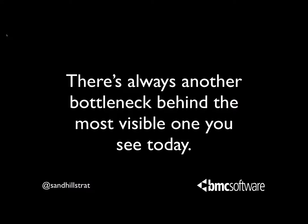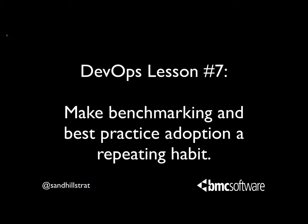There's always another bottleneck behind the most visible one you see today. As you start adopting DevOps, you'll see bottlenecks in your process and have to bust through them — but as soon as you do, more will appear behind them. Keep working on those bottlenecks. DevOps lesson number seven: make benchmarking and best practice adoption a repeating habit. People often do this once or very periodically — not metaphorically after every race the way Mikaela Shiffrin does. After every release, on a fairly fine-grained cycle, sit down for a post-mortem: what can we do better? Where were the rough points? What can we smooth out?